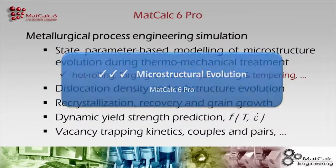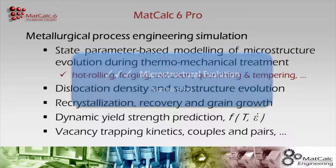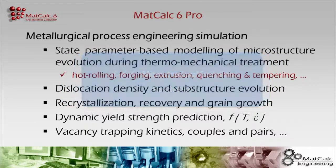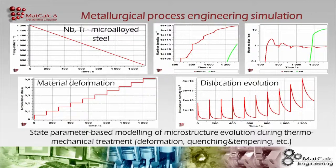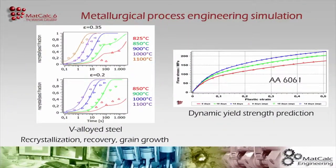The PRO version of MATCALC 6 allows simulation of the entire metallurgical process chain even in complex technological alloy systems. A special highlight in this version is a suite of models for microstructural evolution during thermochemical processes such as hot deformation, cold rolling, forging, or conventional heat treatment. The models cover mechanisms such as recrystallization, recovery, grain growth, and the evolution of crystal defects, as well as the interaction of these processes with precipitation kinetics.